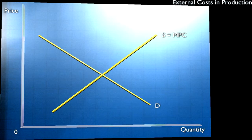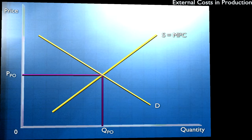And our demand curve, where we'll assume there are no externalities in consumption. Then the market equilibrium price and quantity will be QPO and PPO — that is to say, the private optimum quantity and the private optimum price. But if we assume now that there are some external costs in production, then the marginal social cost will be the marginal private cost raised by the extent of the marginal external cost.